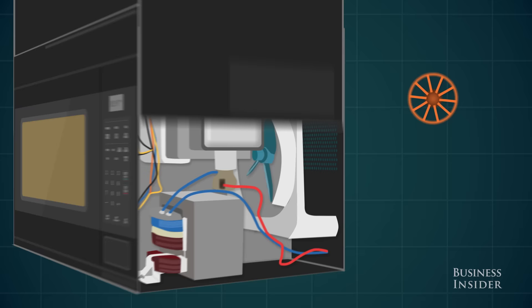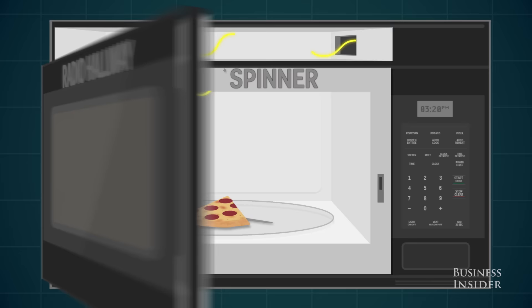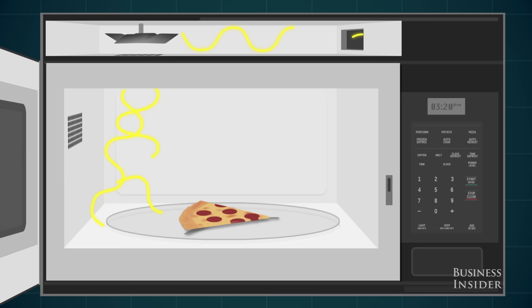The radio waves then move down the radio hallway and into the food box. The metal spinner changes the shape of the radio waves, so the warm spots, where the waves are strong, move around a little.